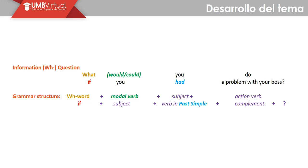'If I had a problem with my boss, I could talk to him as soon as possible.' The grammar structure is: WH word, modal verb, subject, base form verb — este option verb tiene que ir en presente porque con el 'would' y el 'could', el verbo va en su forma base. Posteriormente tenemos el 'if', subject, verb in past simple, and complement. Recordemos que el signo de interrogación va al final de la pregunta. Y también podemos empezar por 'if', which is pretty common.